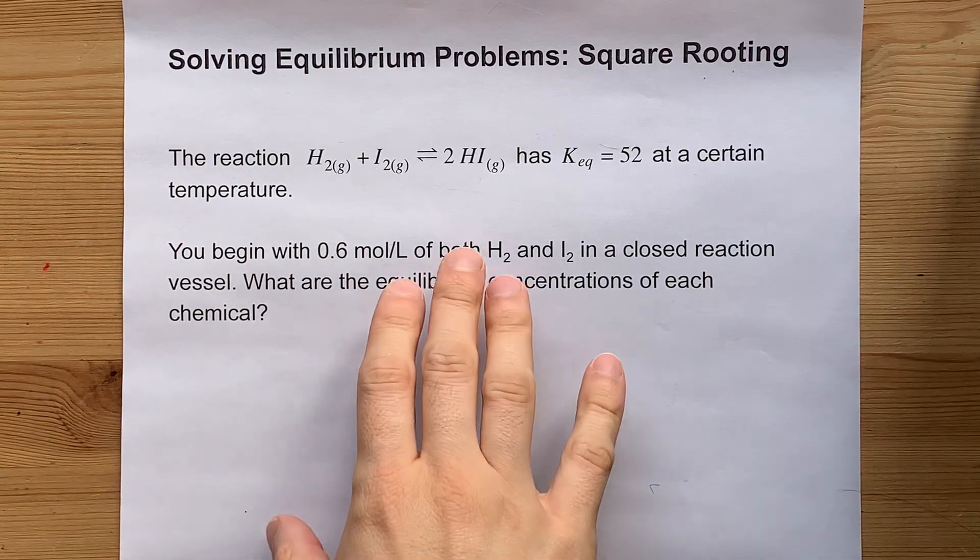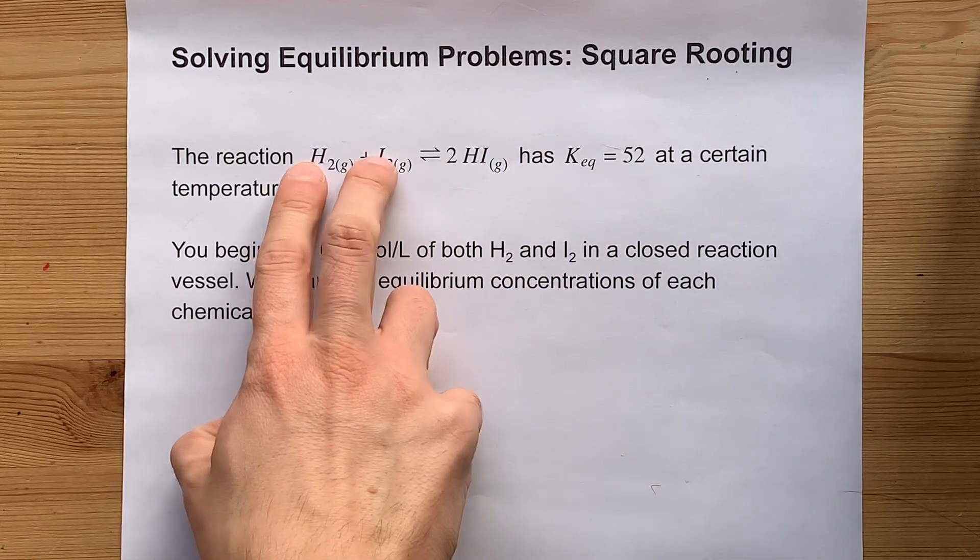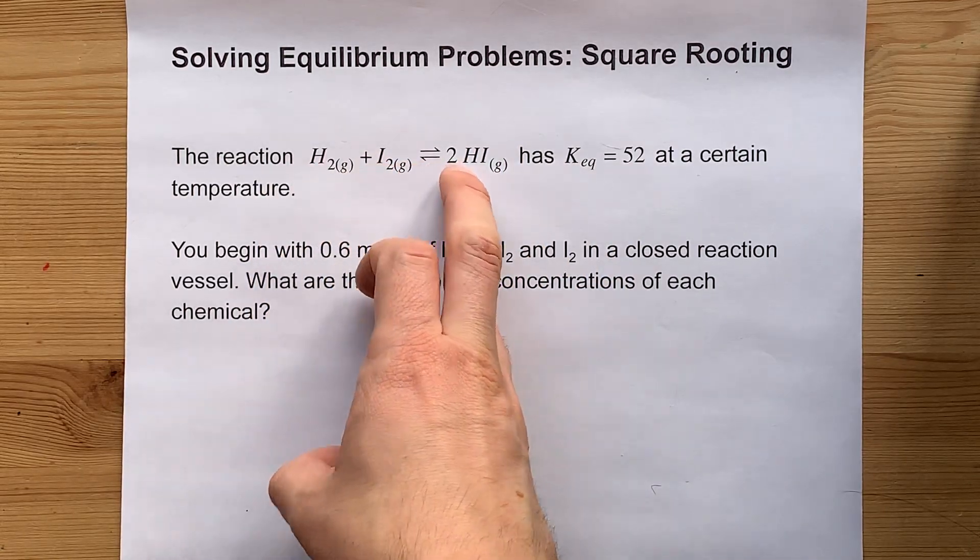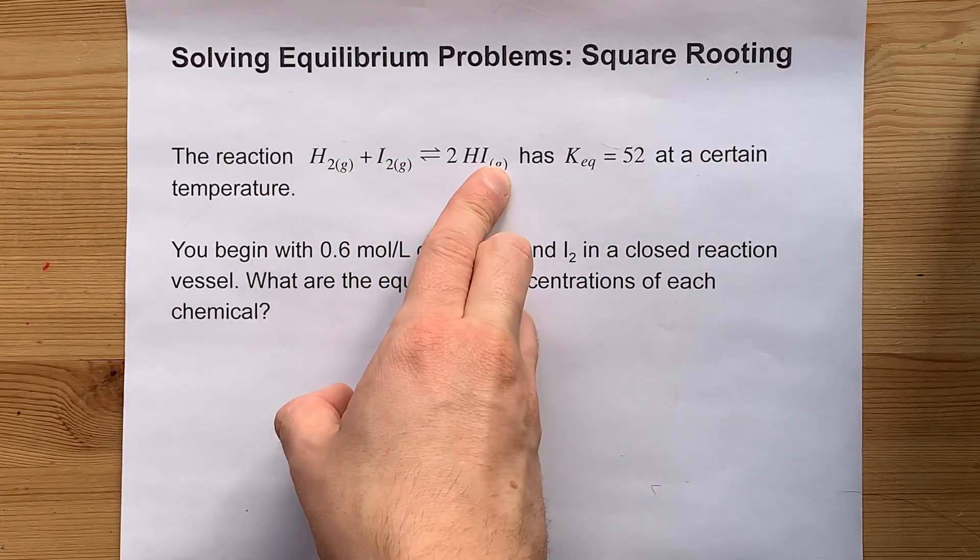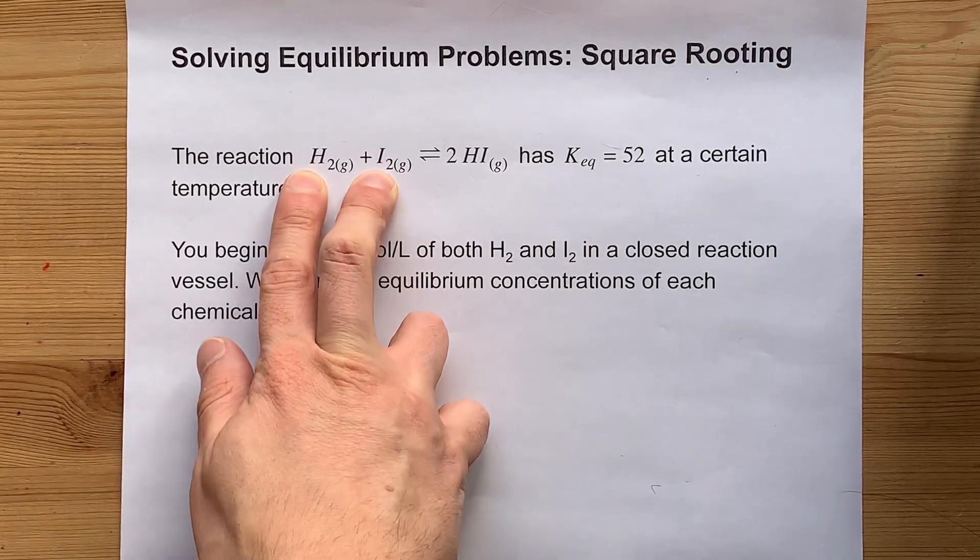Alright, the absolute easiest type of equilibrium problem to solve is where you have two reactants becoming a single product, that's a synthesis reaction, and the coefficients on the two reactants are the same.